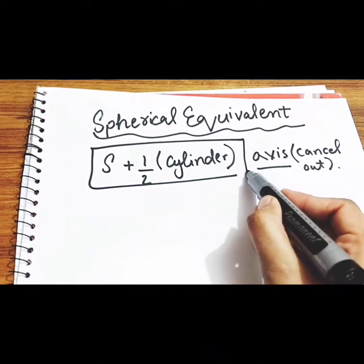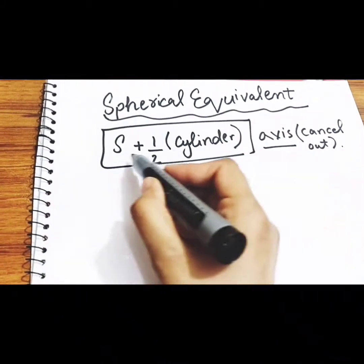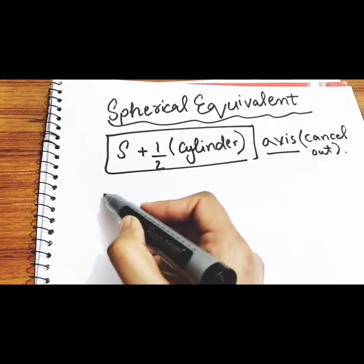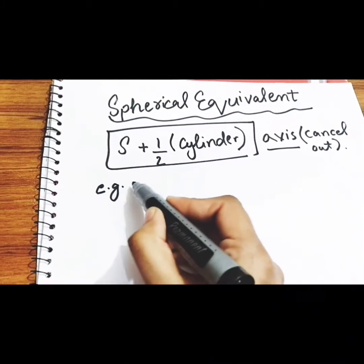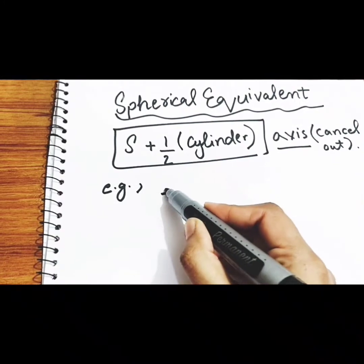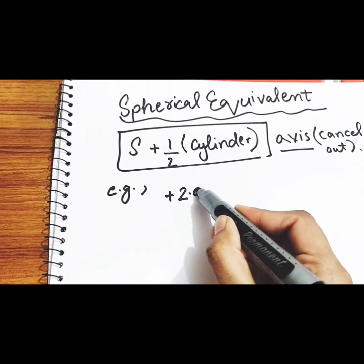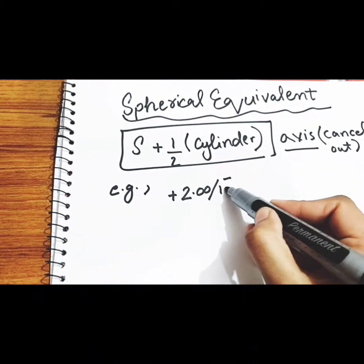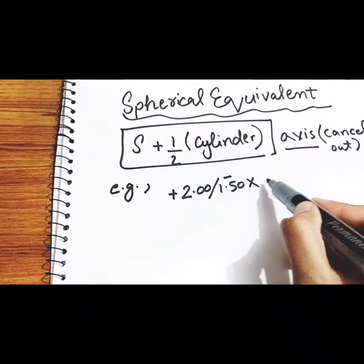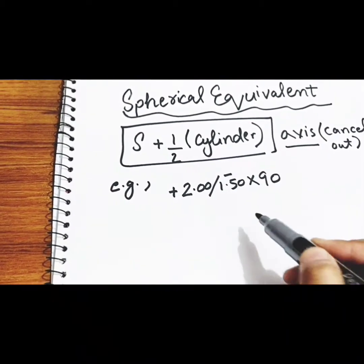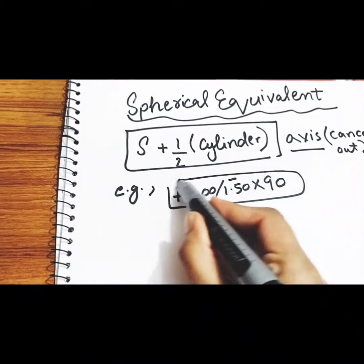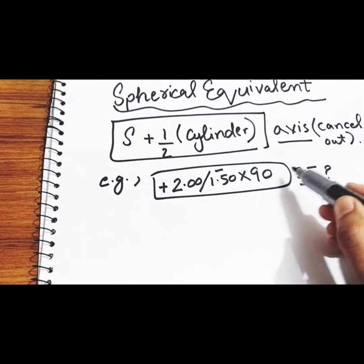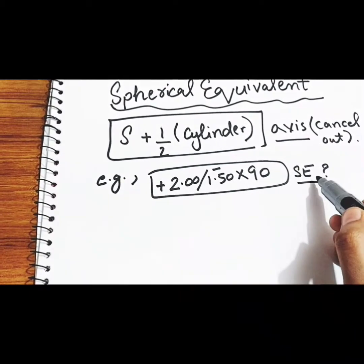Now this is our formula of spherical equivalent: sphere plus half cylinder. Here is an example: plus two sphere, minus 1.50 cylinder, axis 90. This is a sphero-cylinder combination and we will now convert it into spherical equivalent form.